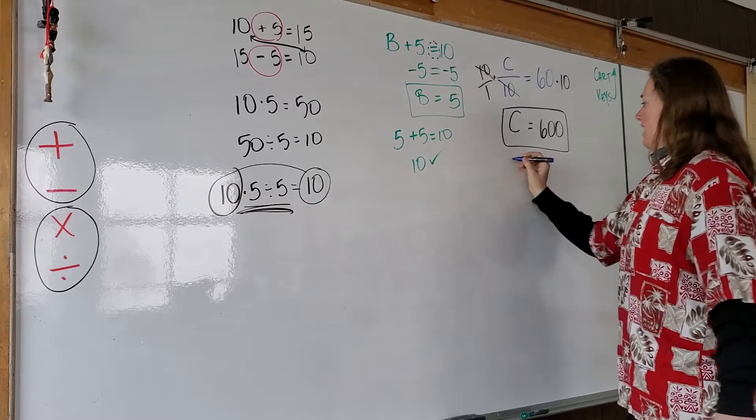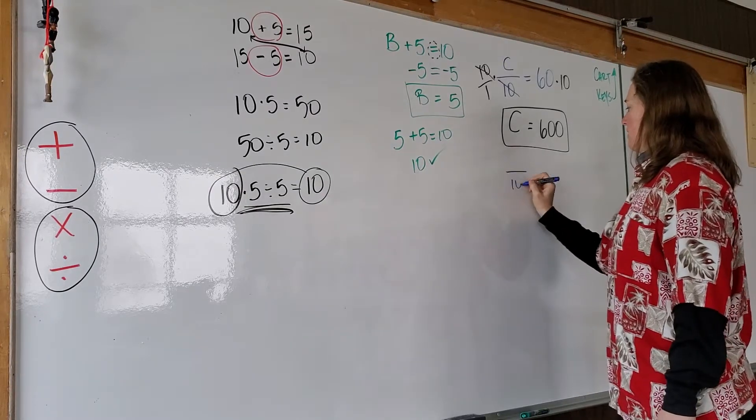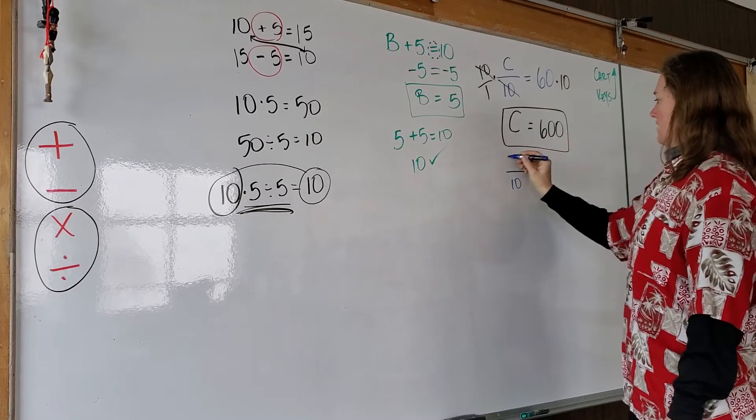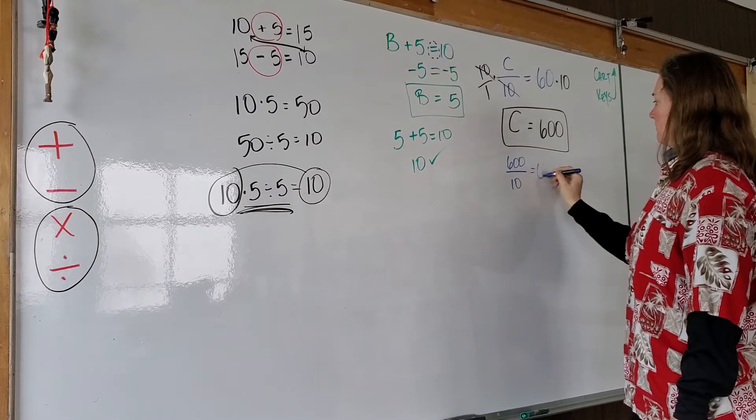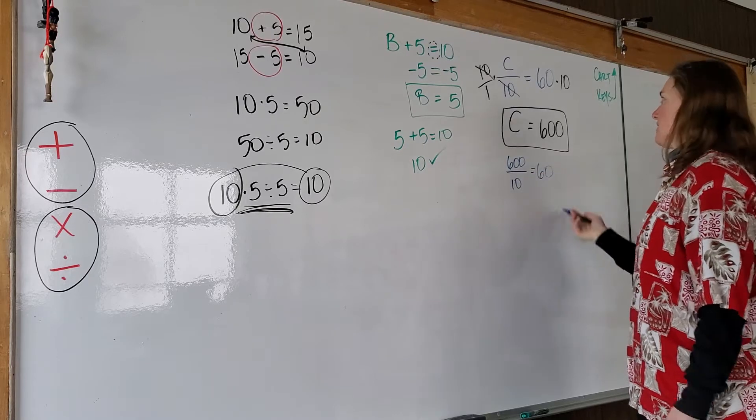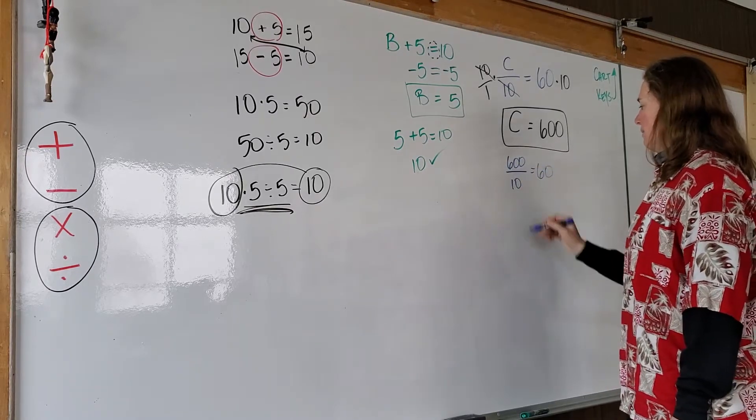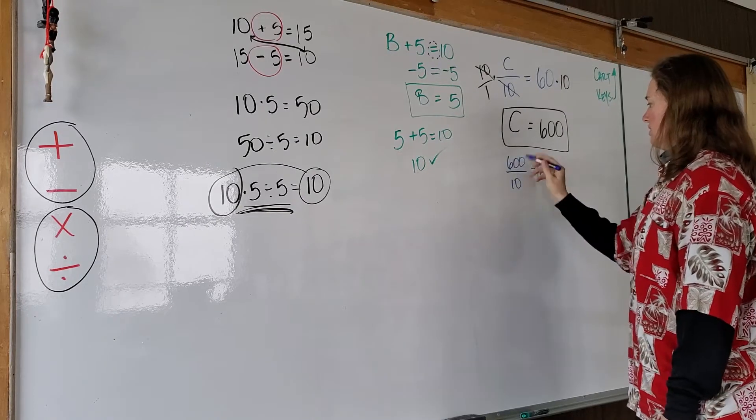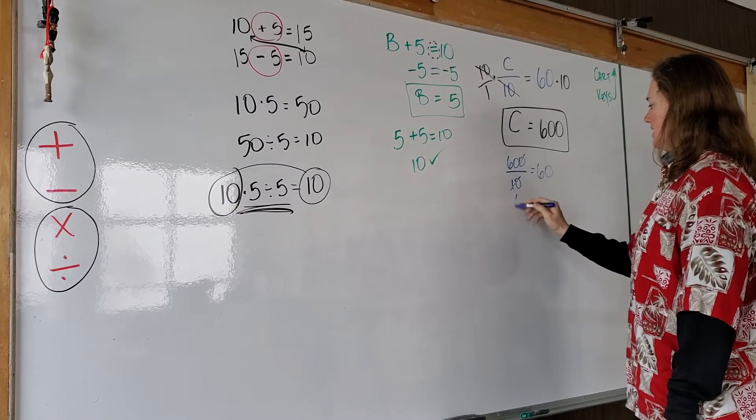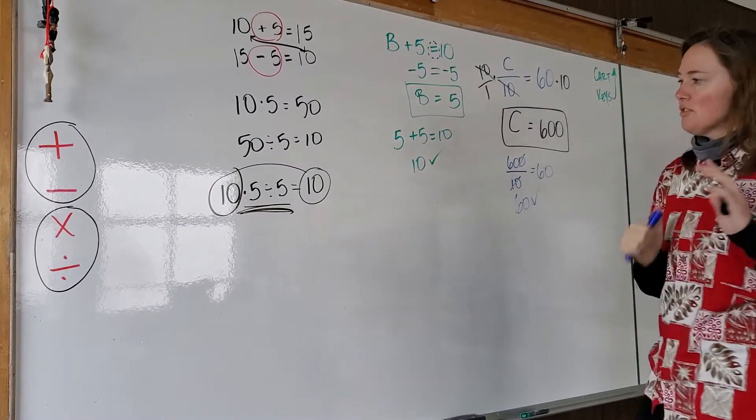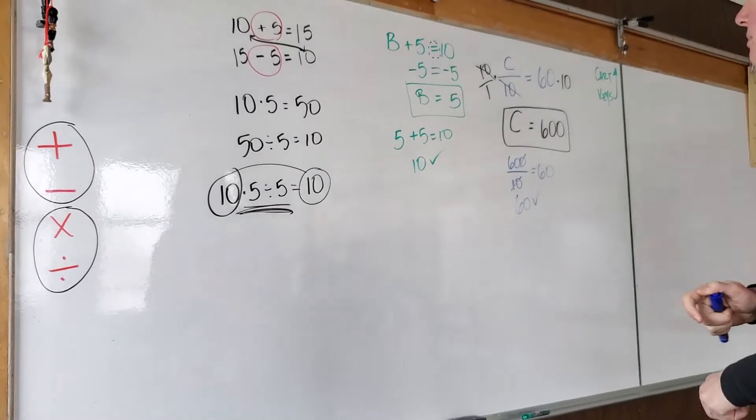And how do we know that this is right? Substitute the value of the variable. So where there's a C in the original equation, we put the value we think it is. Okay. Well, 60 is equal to 60. So that's easy. 600 divided by 10, 600 divided by 10 is 60. Oh, 60 equals 60. We must be good. Okay. Those are the basics of inverse operations.